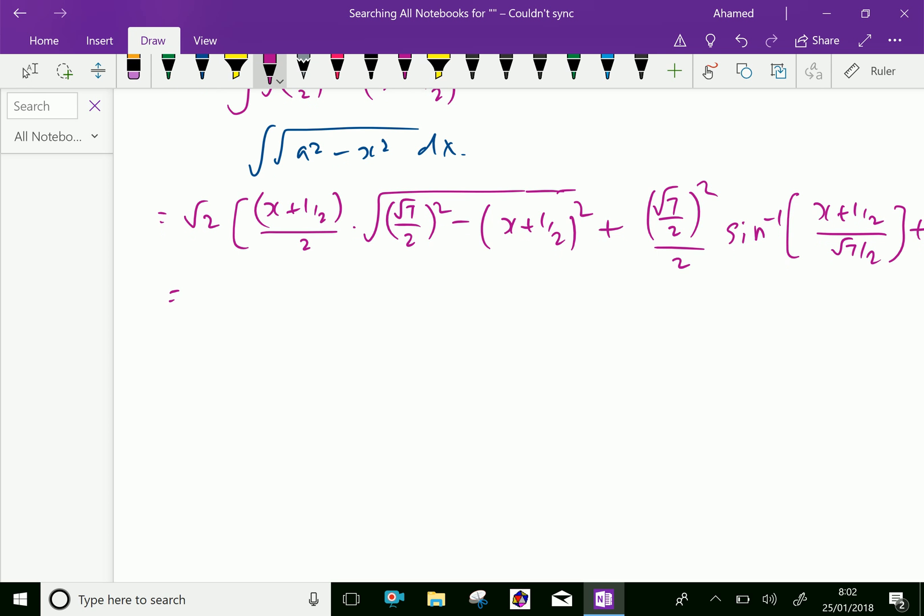Now by simplified manner we can write 2x plus 1 by 2 root 2 into square root of 3 minus 2x minus 2x square after simplification, plus 7 root 2 over 8 sine inverse 2x plus 1 over square root of 7 plus c. We are done.